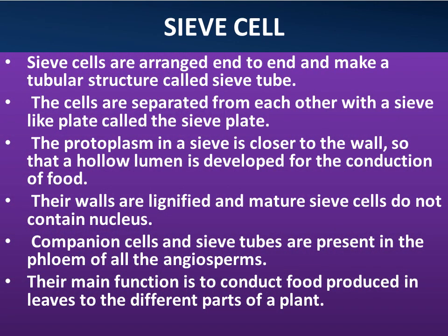Sieve cells: sieve cells are arranged end to end and make a tubular structure called a sieve tube. The cells are separated from each other with a sieve-like plate called the sieve plate. The protoplasm in a sieve cell is closer to the wall, so that a hollow lumen is developed for the conduction of food. Their walls are lignified and mature sieve cells do not contain a nucleus. Companion cells and sieve tubes are present in the phloem of all angiosperms. Their main function is to conduct food produced in leaves to the different parts of a plant.